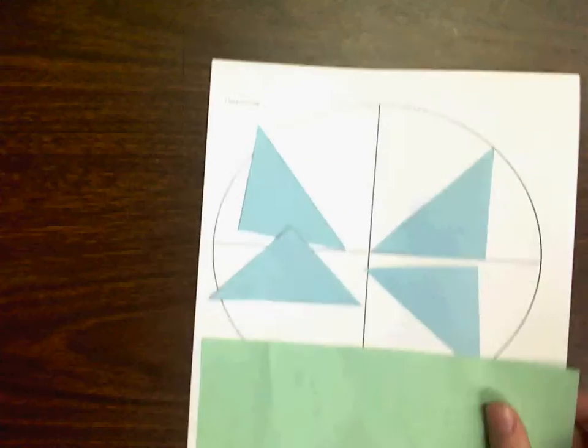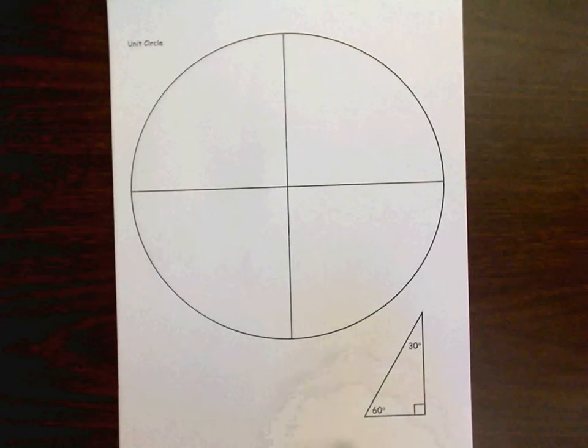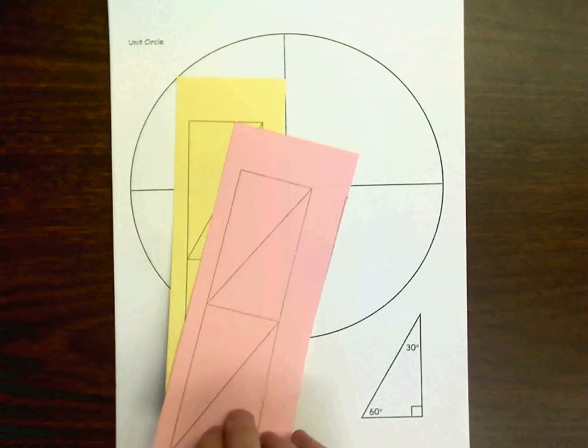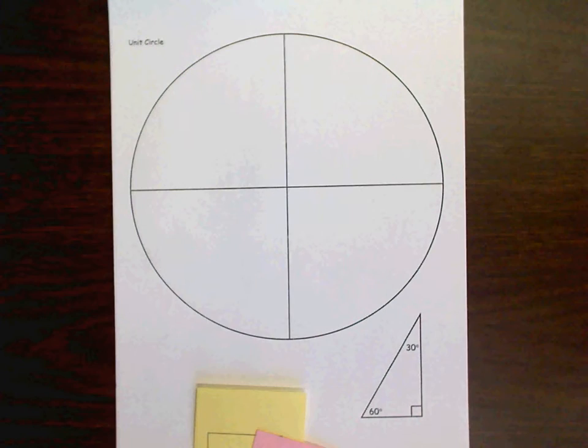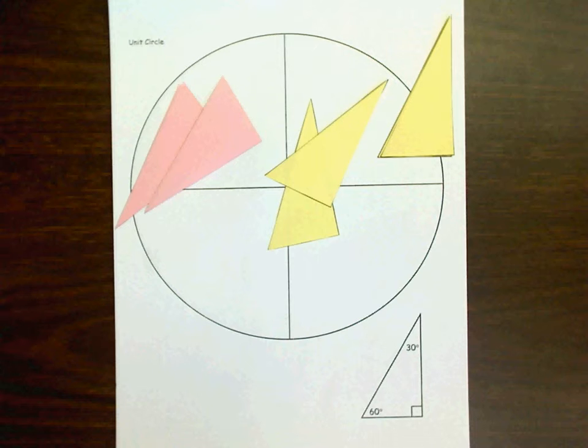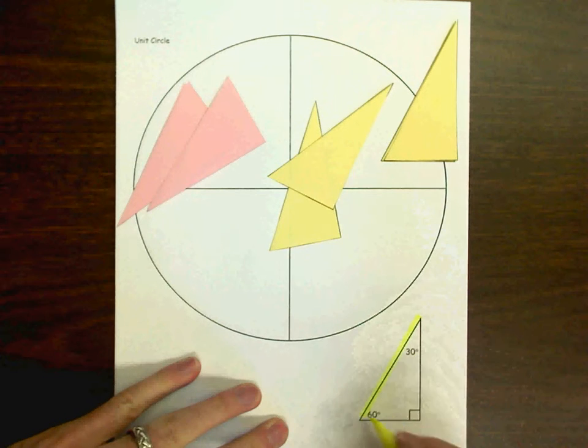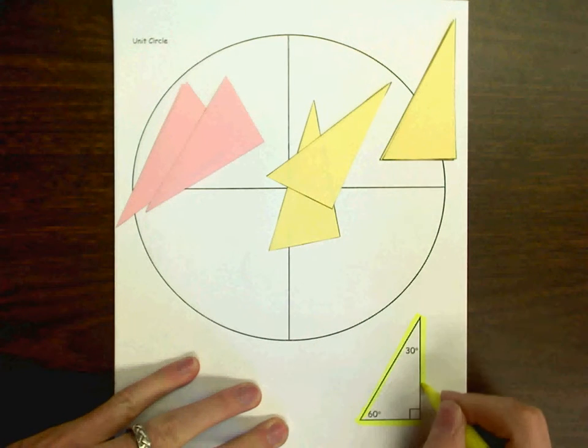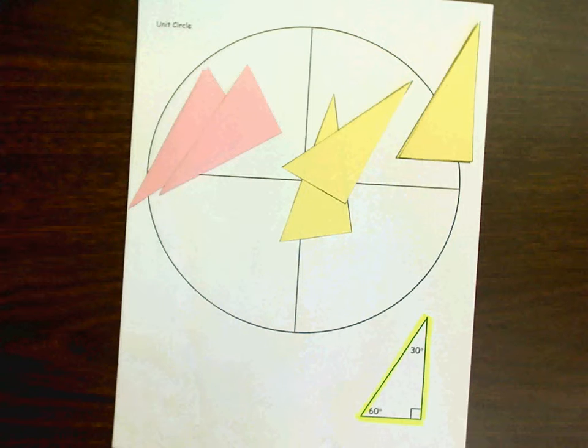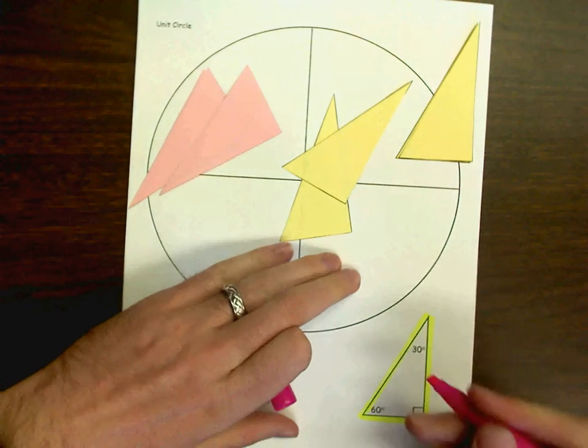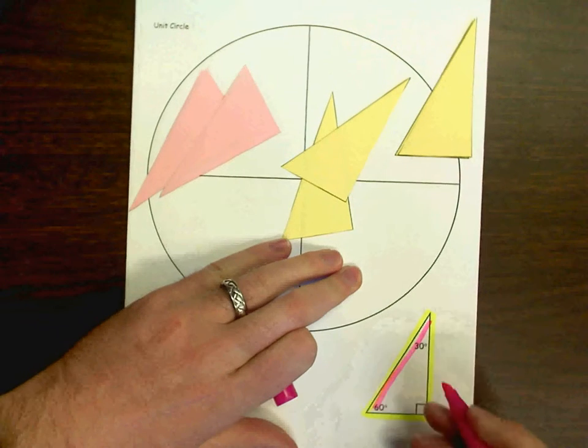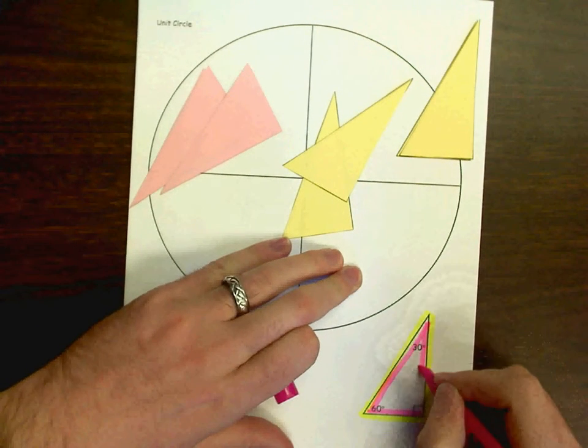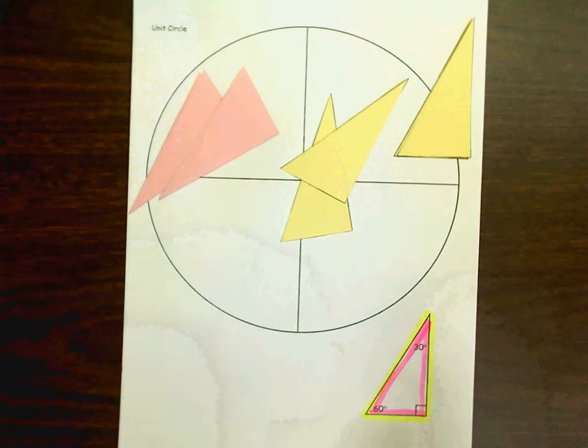Once you're done with that side, flip over the unit circle to the other side. On this side, we will be using both the yellow and the pink triangles. So, you'll need to cut both of them out again. Like that. And, just for emphasis, please remember, yellow and pink. They both happen to be 30, 60, 90 triangles. There you go. Yellow and pink.